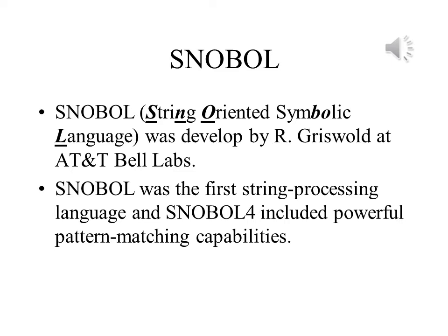Snobol was a programming language developed for string processing. It was developed by David Farber, Ralph Griswold, and Ivan Polanski. It was one of several languages developed for that particular purpose, but what made it stand out was the fact that it included string patterns as a standard data type. Its development culminated in Snobol 4, which was a powerful tool in text processing in the late 1960s and 1970s. Other languages were developed for this purpose, including AWK and Perl, which became far more popular.